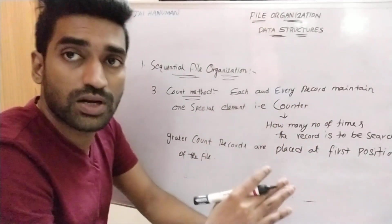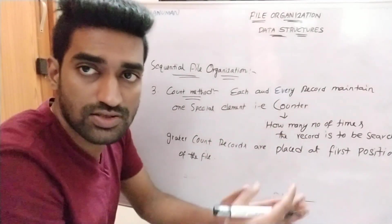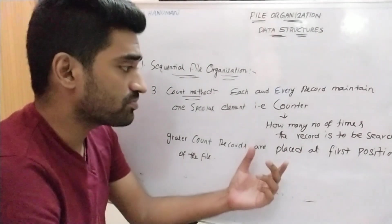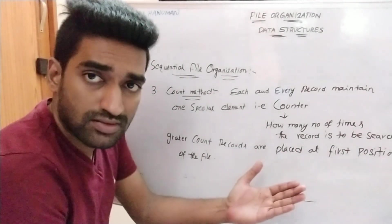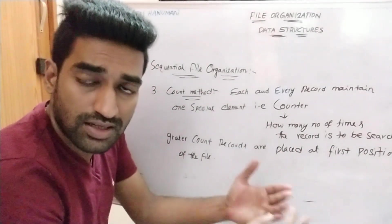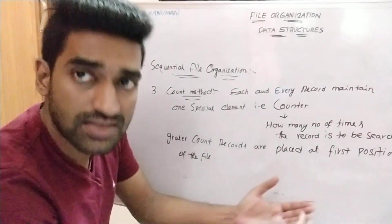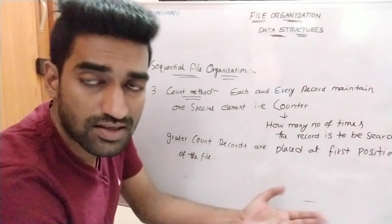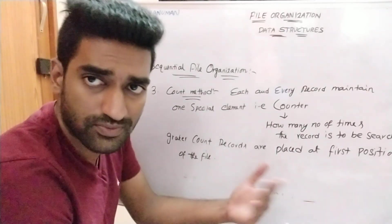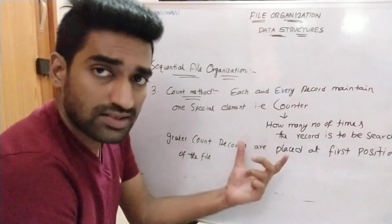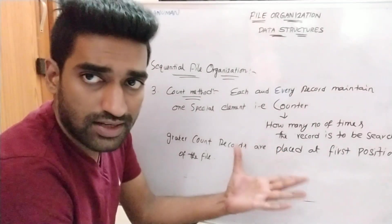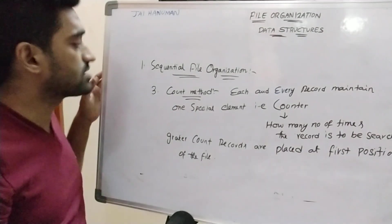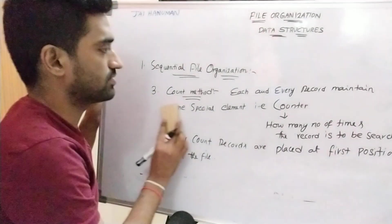For suppose, r1 record contains 50 times and r3 record contains 30 times — for each and every record we are maintaining one counter element. Now I am taking one example for the counter method.